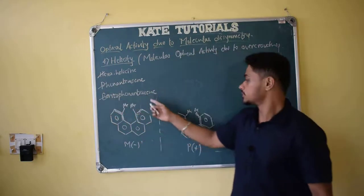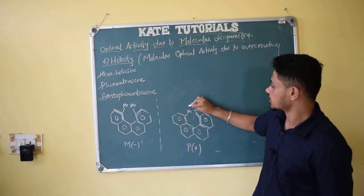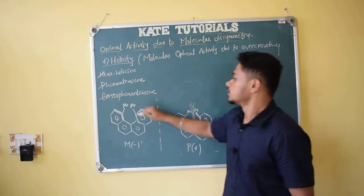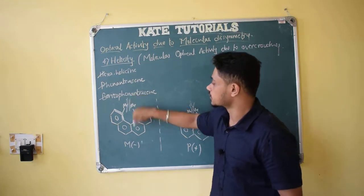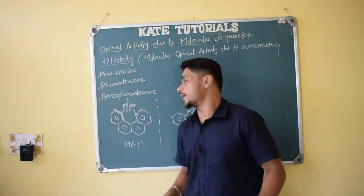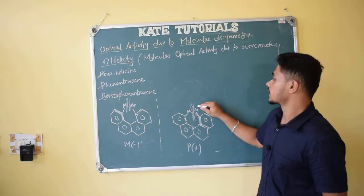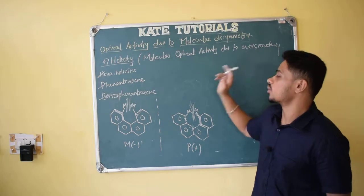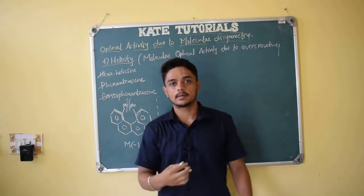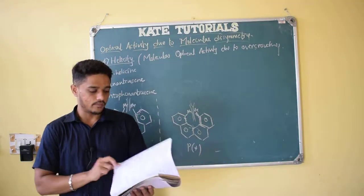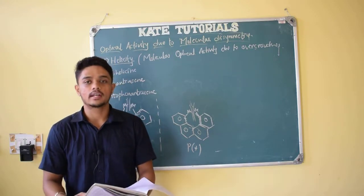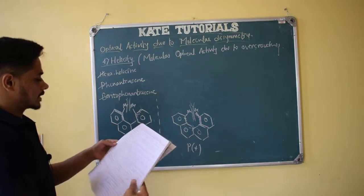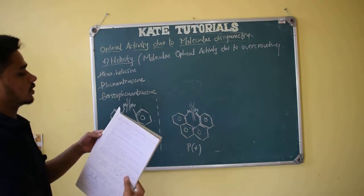So we have discussed hexahelicene, phenanthrene, and benzo-phenanthrene. Why did we discuss all these? Because of overcrowding: overcrowding leads to repulsion, causing the molecules to twist away from a single plane, because of which they become optically active. This is molecular optical activity due to overcrowding. This is the overcrowding effect.